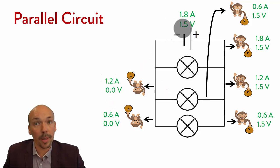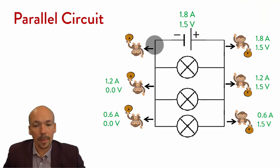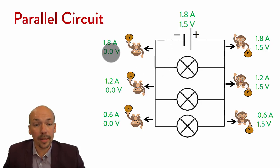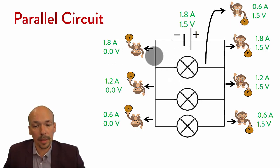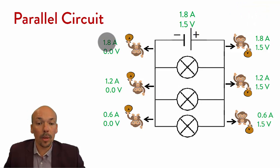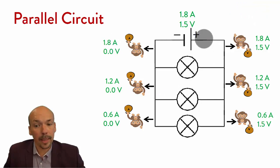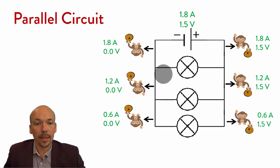The same happens at the next junction. 1.8 amperes and 0.0 volts return, because the amperes that went through the lamps lost their volts — the lamps used them to work. The 1.2 plus the 0.6 is 1.8. So the 1.8 amperes that left the battery are back again, having all lost their volts to different lamps. This is how a parallel circuit works.